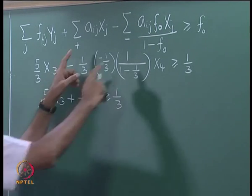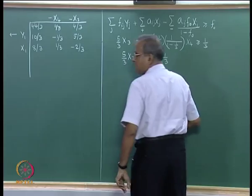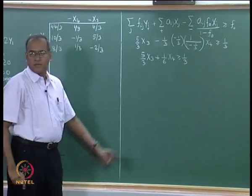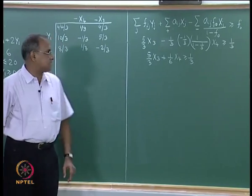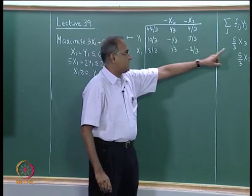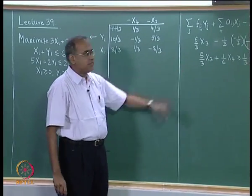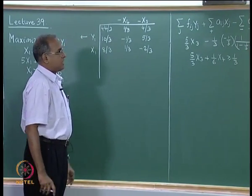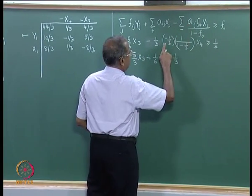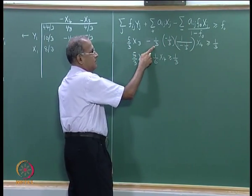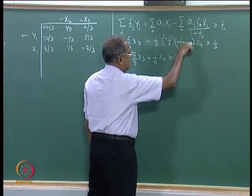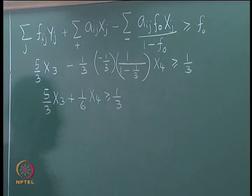We have to look at only these two terms. One term has a positive coefficient for Xj, and the other has a negative coefficient for Xj. The one with the positive coefficient remains as 5/3·X3. The one with the negative coefficient becomes -Aij·F0/(1-F0), where F0 is 1/3, Aij is -1/3, and 1 minus F0 is 2/3.